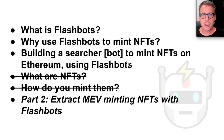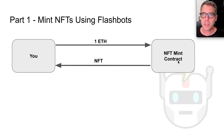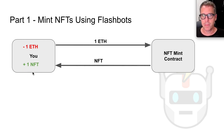In Part 2, we will be extracting MEV, or Maximally Extractable Value, by minting NFTs with Flashbots. We will be creating a transaction using Flashbots which will send some amount of ETH to an NFT minting contract, and so long as we land the transaction at the right time while this NFT minting contract is open for new mints, this contract will send us an NFT back. At the end of this transaction, we will be down 1 ETH and up 1 NFT, and it is up to us to determine whether this trade was worth it.